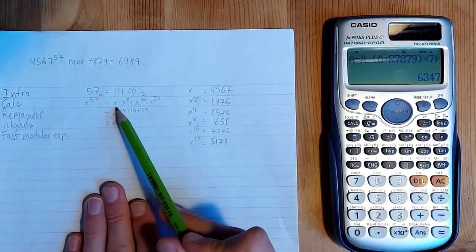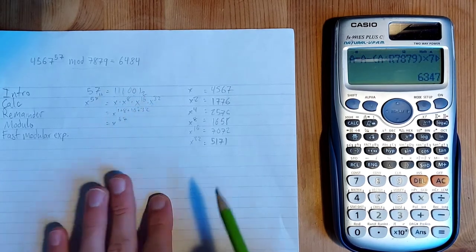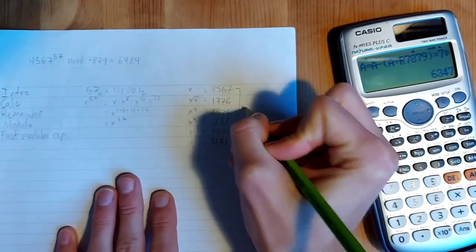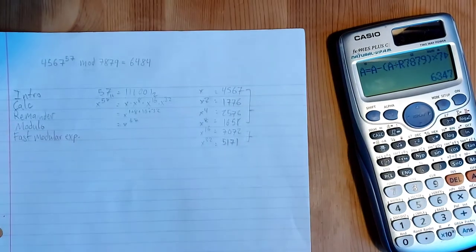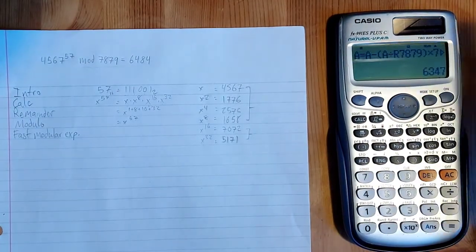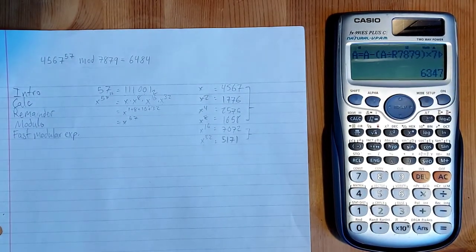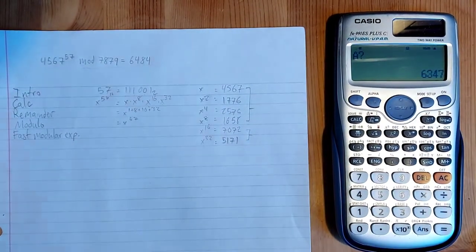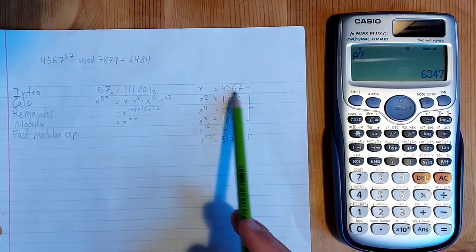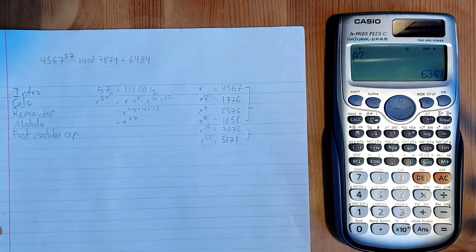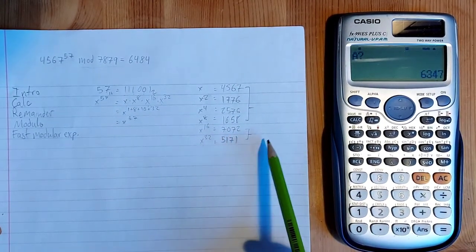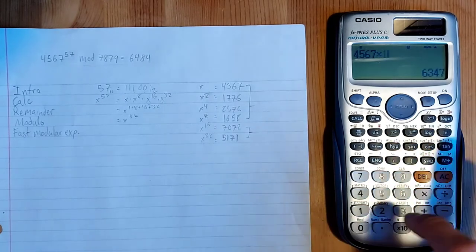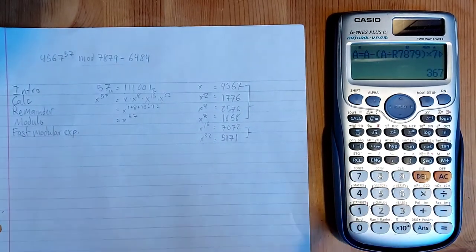But yeah, so that's just something that we can also use in this new step. So we need to find x times x to the 8 times x to the 16 times x to the 32. So I'm going to sort of group these together. And the reason why I'm doing this is because if we were to do too big of an operation, it wouldn't fit into what the calculator is able to represent again. So I'm just going to take them sort of two at a time. I'm going to do 4567 times 1658, and then take that mod whatever.